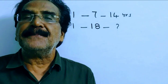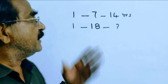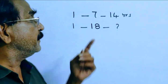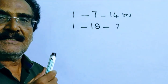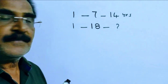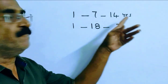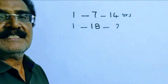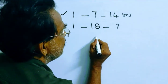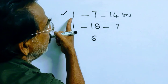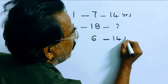A sum of money becomes 7 times of itself in 14 years. Sum becomes 7 times of itself implies if the sum is 1 rupee, it becomes 7 rupees in 14 years. 1 rupee becomes 7 rupees implies interest earned is 6 rupees — 1 plus 6 equals 7. So to earn 6 rupees interest, it takes 14 years.